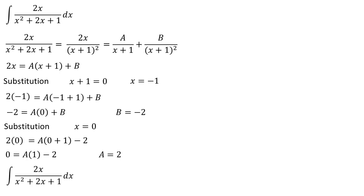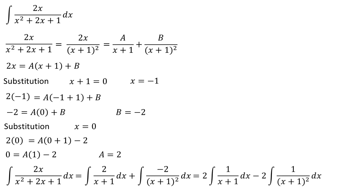Okay, the integral of 2x over x squared plus 2x plus 1 dx equals the integral of 2 over (x+1) dx plus the integral of negative 2 over (x+1) squared dx, which gives 2 times the integral of 1 over (x+1) dx minus 2 times the integral of 1 over (x+1) squared dx.